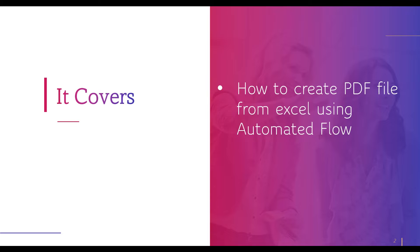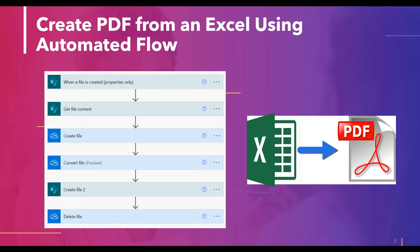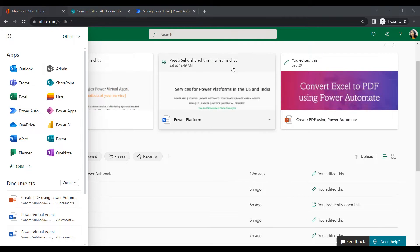Let's see how this works. Basically, our flow will look like this: when the user inserts any Excel file, it will automatically be converted to a PDF format and saved in our desired SharePoint document library.